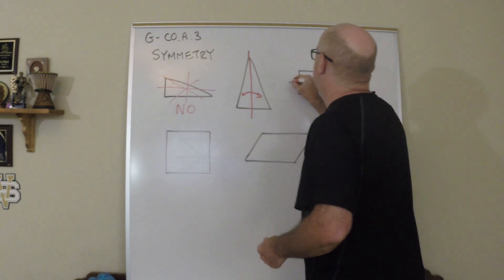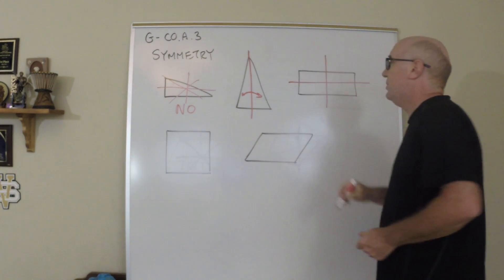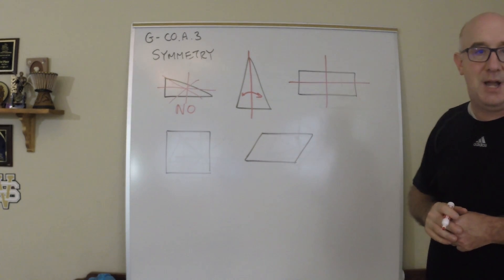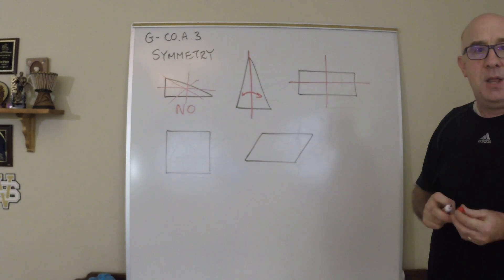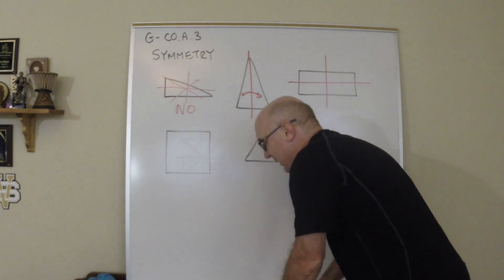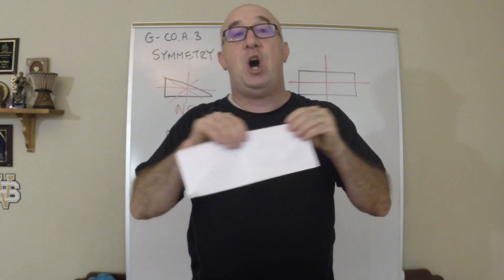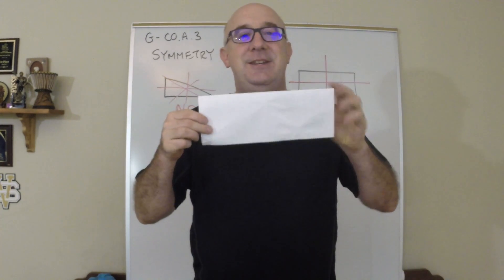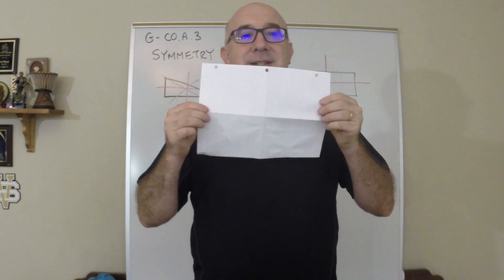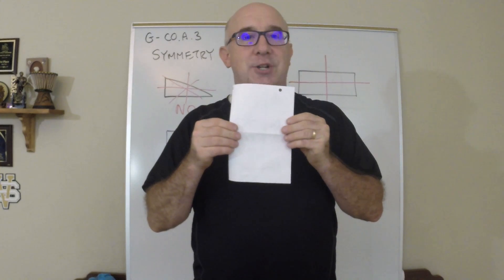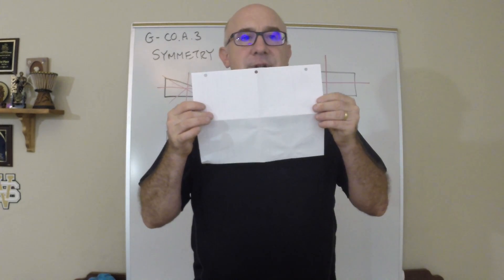This rectangle, of course, would have a horizontal and a vertical line of symmetry. You can see that on paper, that if you take a piece of paper and were to fold it onto itself, you get line symmetry. Or if you folded it onto itself this way, you get line symmetry.